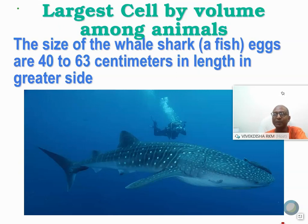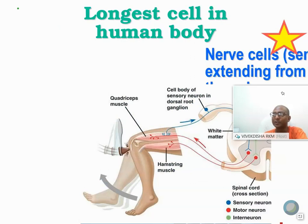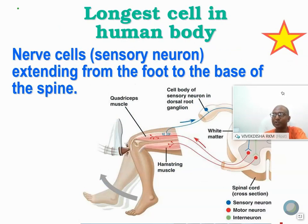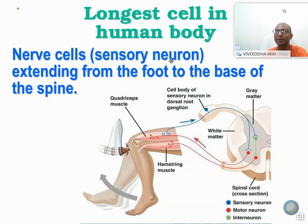Now for the human body: the longest cell in the human body. Do not just write 'nerve cell' because nerve cells vary in length. You must specify: it is the sensory neuron, extending from the foot to the base of the spine — nearly one meter in length. That is the longest cell in the human body. Let me show you something to help understand the functioning of the human nerve cell.